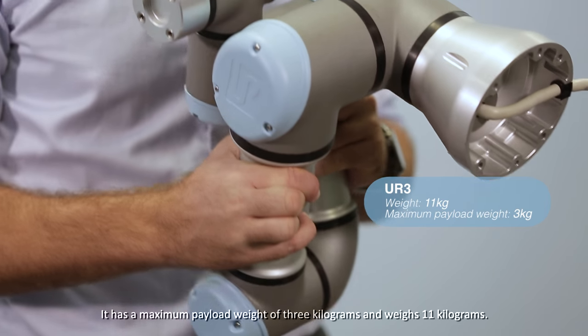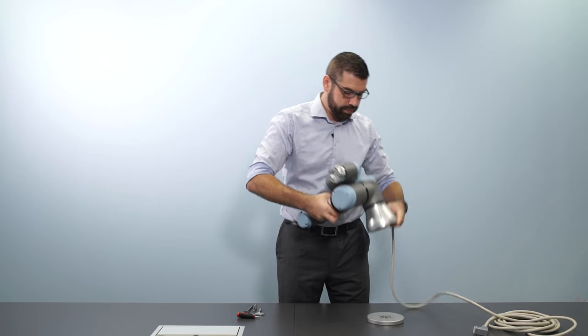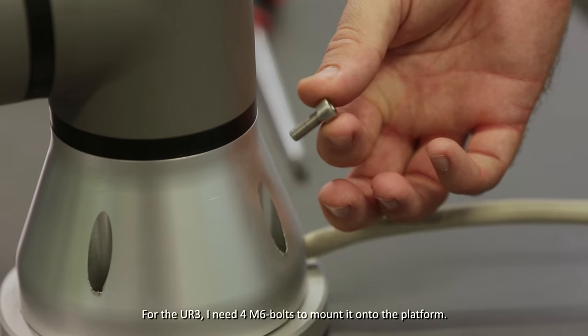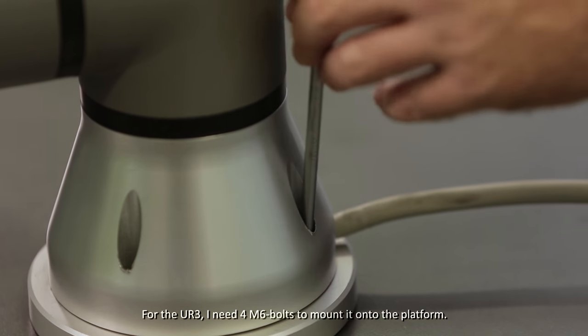It has a maximum payload weight of three kilograms and weighs only 11 kilograms. For the UR3, I need four M6 bolts to mount it onto the platform.